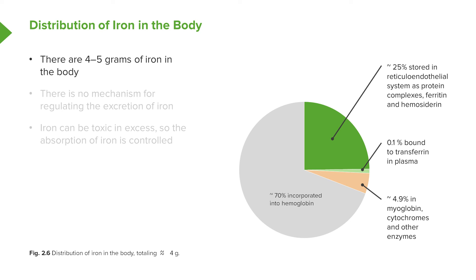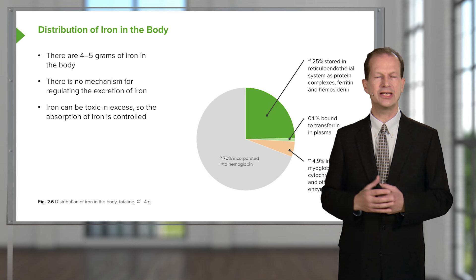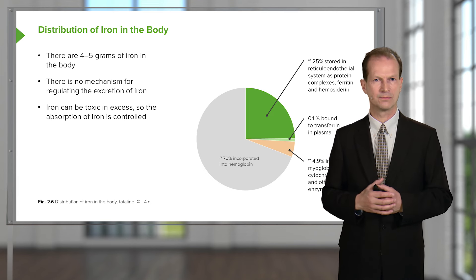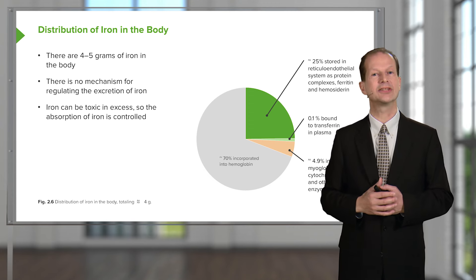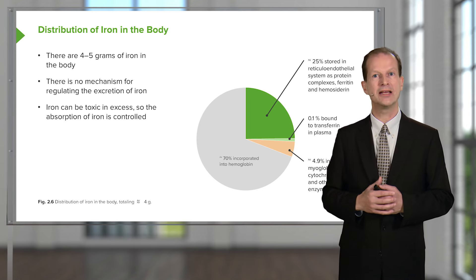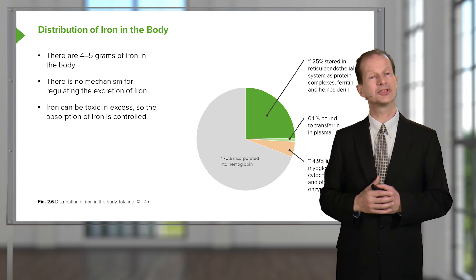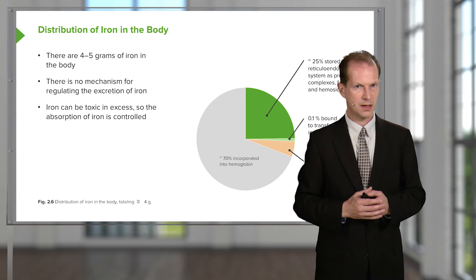Let's take the first of these, and that is iron deficiency. First we have to consider the physiology of iron within your body. Iron is one of the most common elements in the crust of the earth, and yet we only have around four or five grams of iron within our body. There's also no mechanism for regulating the excretion of iron, so we have to be very careful how much iron we absorb. Iron can be quite toxic in excess and can even lead to damage of DNA, so absorption of iron is controlled to levels needed to maintain normal physiological function. The diagram shows where this iron is held, with 70% incorporated into hemoglobin and 25% stored in the reticuloendothelial system, with minor fractions circulating within the blood.